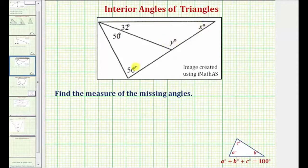Notice in our diagram we actually have three triangles. We have one smaller triangle here, another smaller triangle here, and then also a large triangle here.